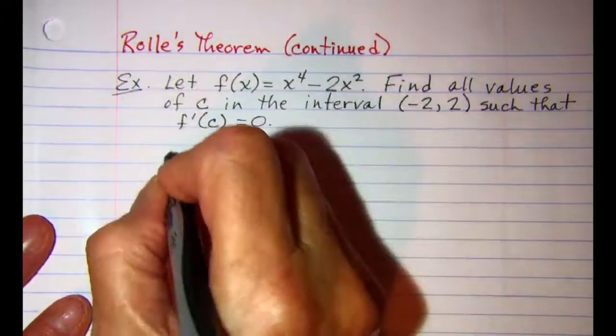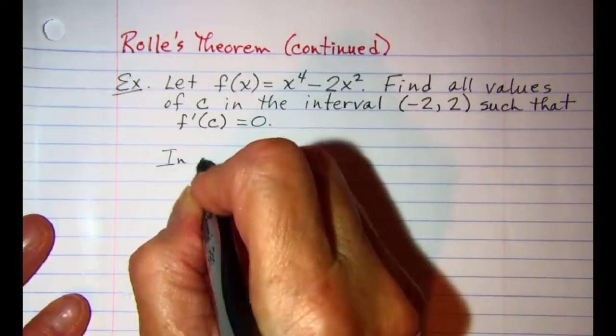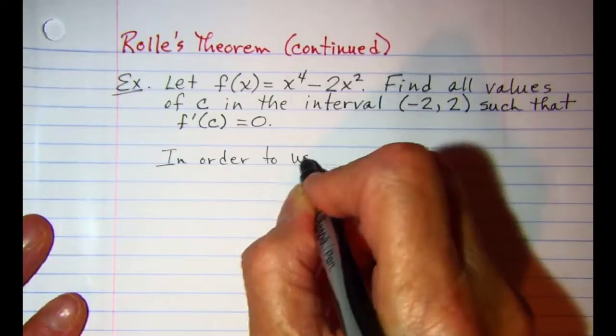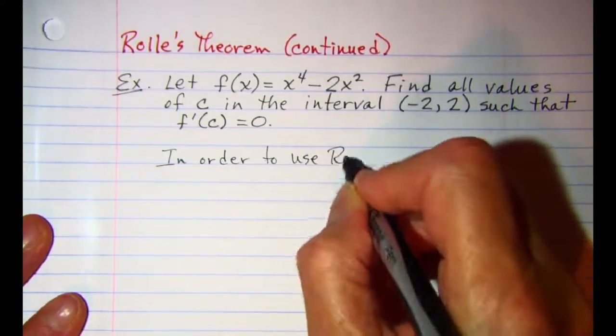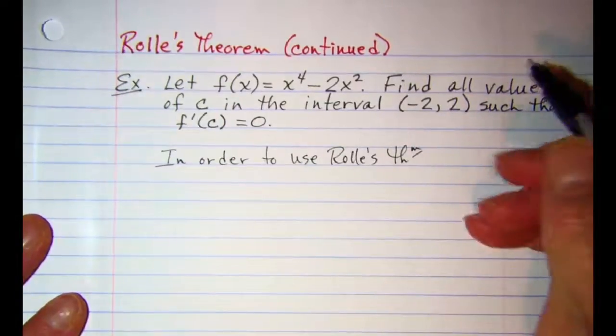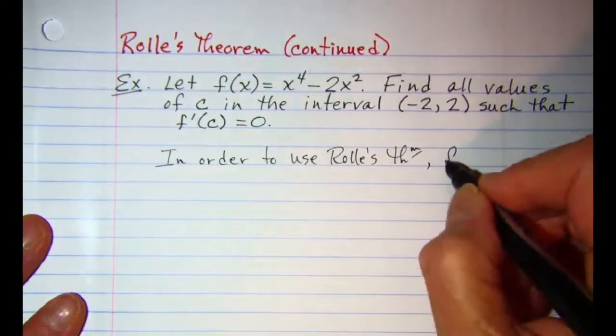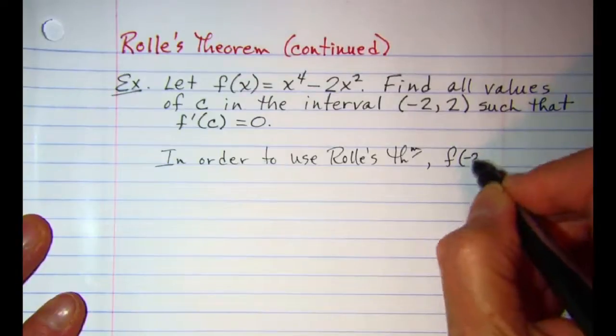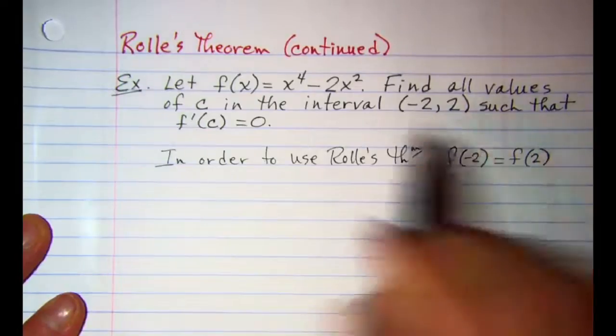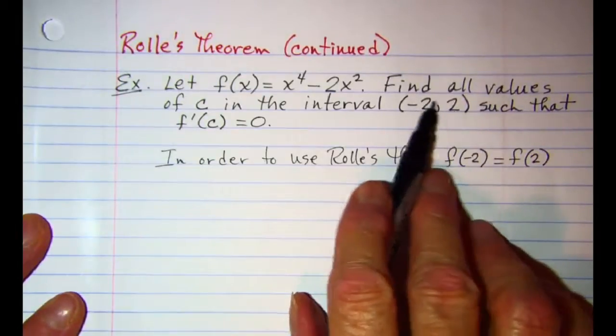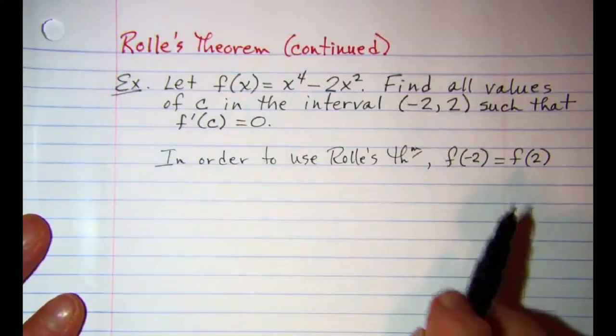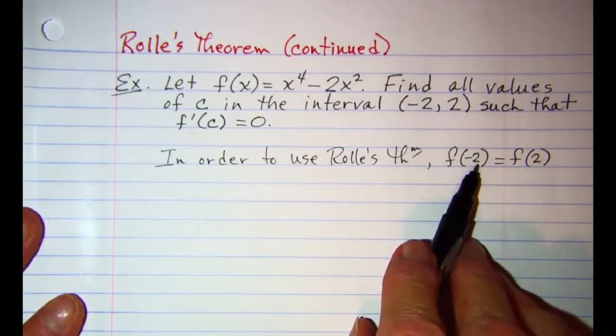In order to use Rolle's theorem we need for f of negative two to equal f of positive two because those are the endpoints of the open interval that we're investigating. So we can check to see if this is true.